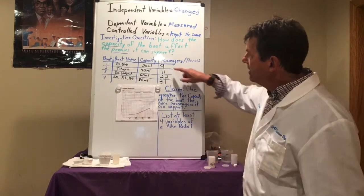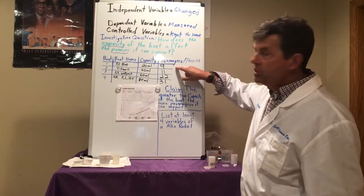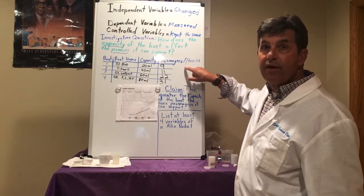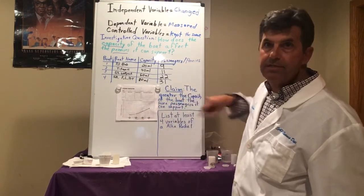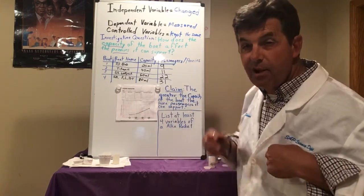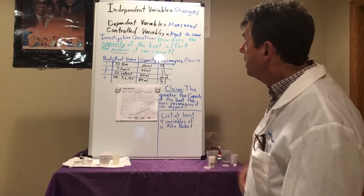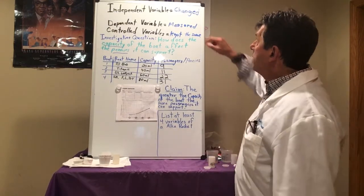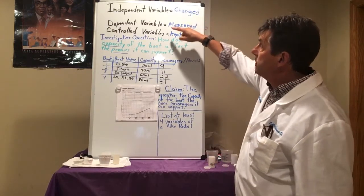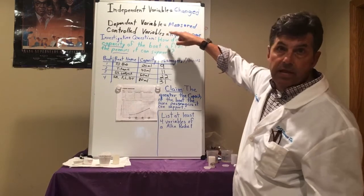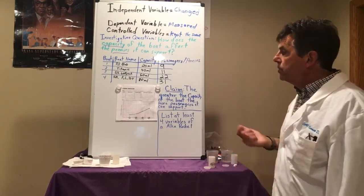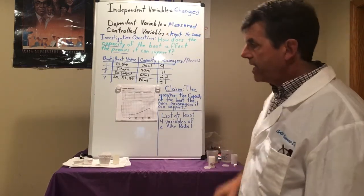Ideally, we would have done each one at least three times and then found the average and then graphed the averages. As I mentioned, time's sake, we're speeding up. But all along we've been looking at independent variables, dependent variables, and controlled variables, and I appreciate you working with that.